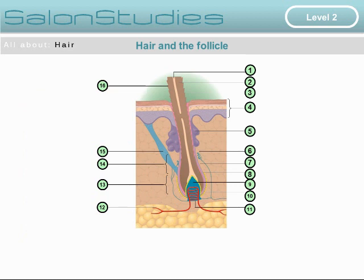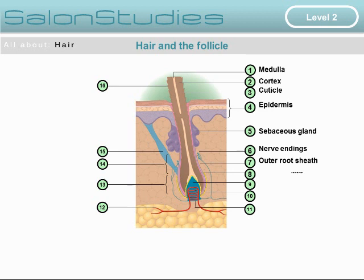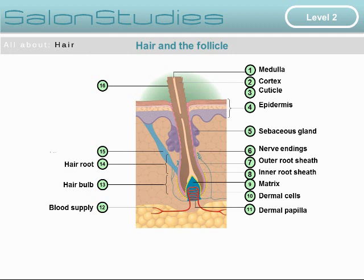Here we see the hair and the hair follicle. We see the medulla, the cortex and the cuticle, which are parts of the hair. Looking at the skin, we see the epidermis, sebaceous gland, nerve endings, the outer root and the inner root sheath, the hair matrix, the dermal cells and the dermal papilla. And then the blood supply through the blood capillary network, the hair bulb, the hair root, the erector pili muscle and the hair shaft.